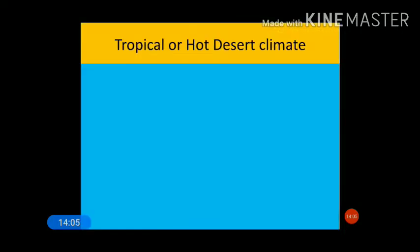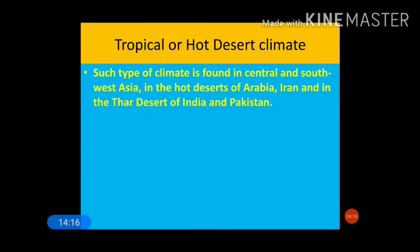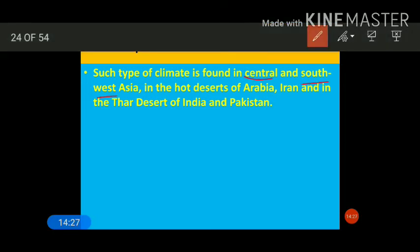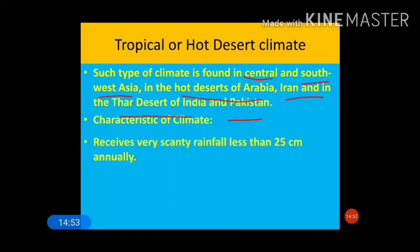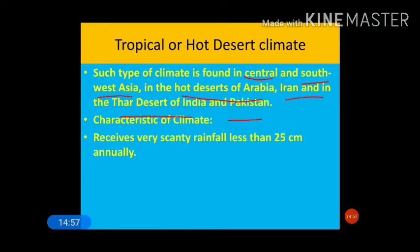Tropical or hot desert type of climate is found in the western part of Asia. Central and southwestern Asia, especially the hot deserts of Arabia, Iran, and the Thar desert of India and Pakistan, experience this type of climate. A key characteristic is they receive very scanty rainfall — less than 25 centimeters annually.